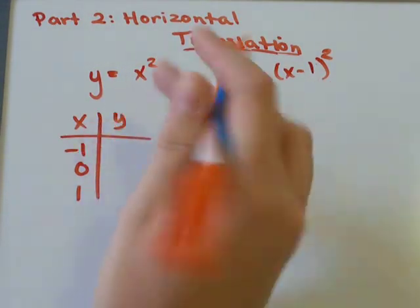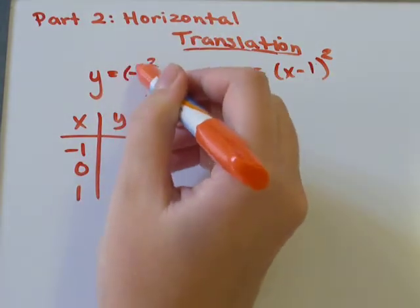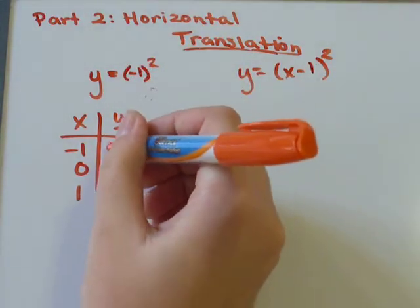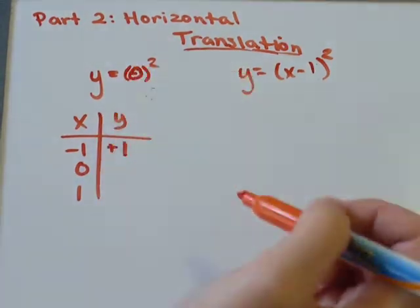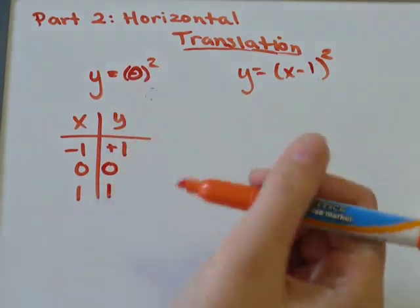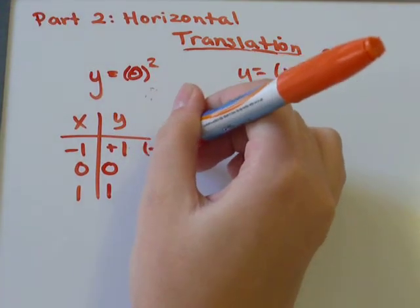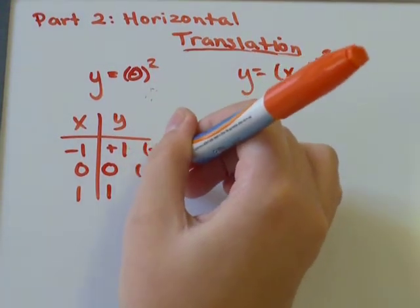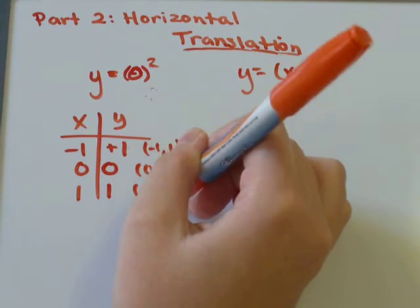So if x was negative 1, negative 1 squared would be positive 1 for y. 0 squared, y would be 0, and 1 squared would be 1. So now I've got the points negative 1, 1, 0, 0, 1, 1.